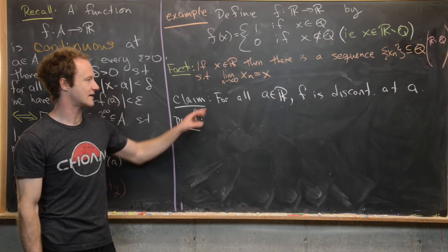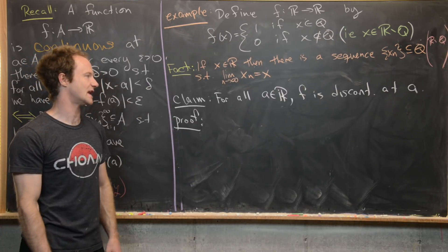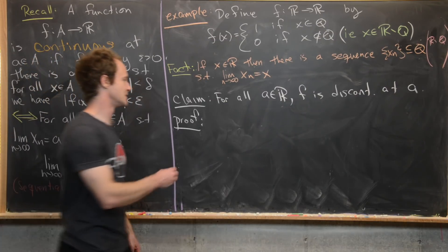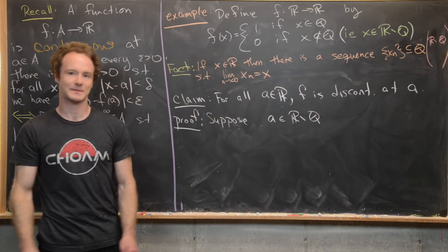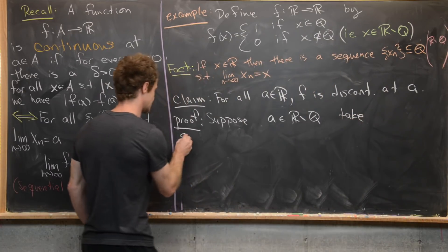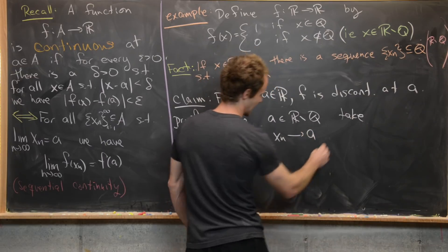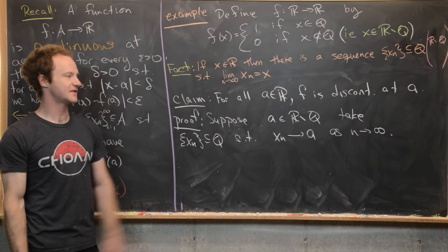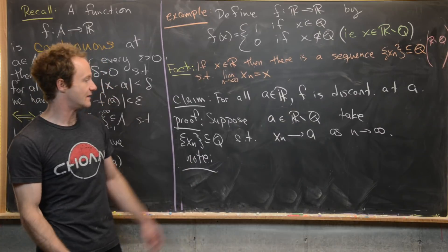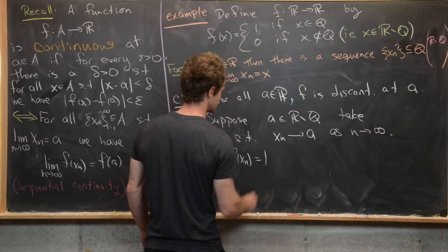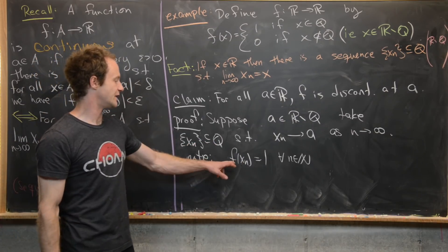The claim is that for all a ∈ ℝ, f is discontinuous at a. We prove only the case when a is irrational, and leave the rational case (which is essentially the same) as an exercise. So suppose a ∈ ℝ \ ℚ, and take a sequence x_n in ℚ such that x_n → a as n → ∞ — this is possible by our density fact.